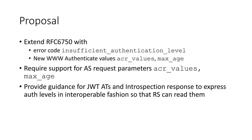Finally, in the case where you are using a JWT access token, there are claims that are optional, but in the particular case where the authorization server received ACR values in the request we can make them mandatory — if the client asks for a particular ACR value and you use that, then you should put it as a claim. If you are using introspection, we are thinking we can add to the IANA registry of attributes that you can get back from introspection — also ACR, auth_time, and similar. These would basically cover it.